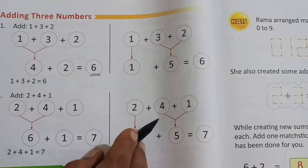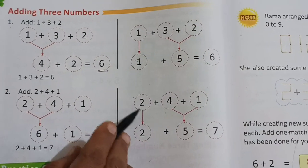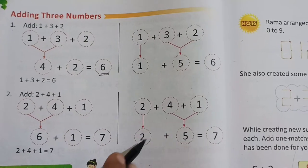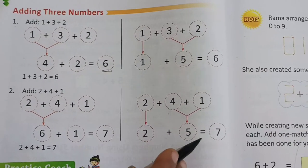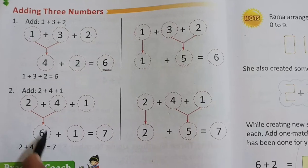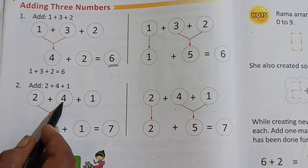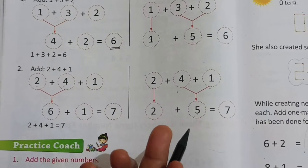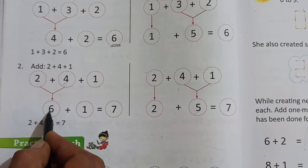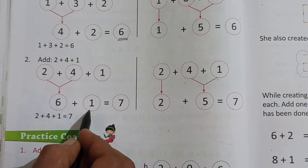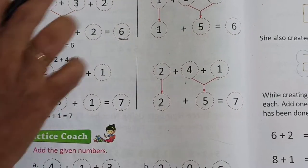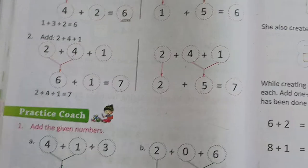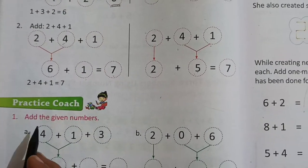Look here. Here in this side also. First number as it is. Second, 4 plus 1, 5. And then 2 plus 5 is equal to 7. Here first two numbers. 2 plus 4. After 2, 3, 4, 5, 6. Then 6 plus 1, 7. Like this you have to complete the adding three numbers.